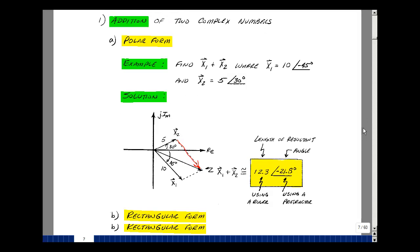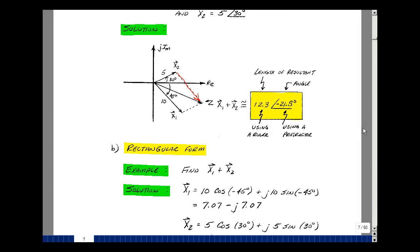Now let's do the same problem in rectangular form, using Euler's identity. So my first phasor was 10 at angle minus 45, so that's going to be 10 times the cosine of minus 45, plus J10 times the sine of minus 45. The cosine of plus or minus 45 is 0.707, or the square root of 2 over 2, so multiply that by 10 and you get 7.07.